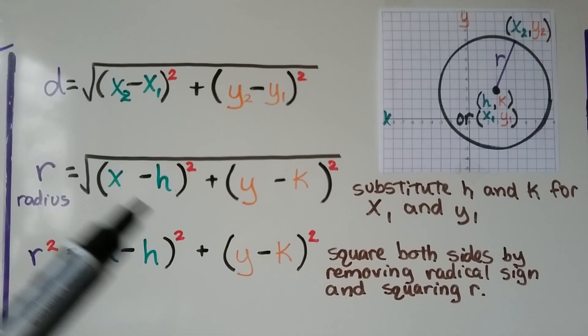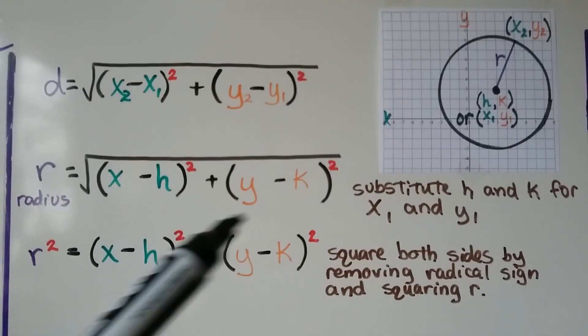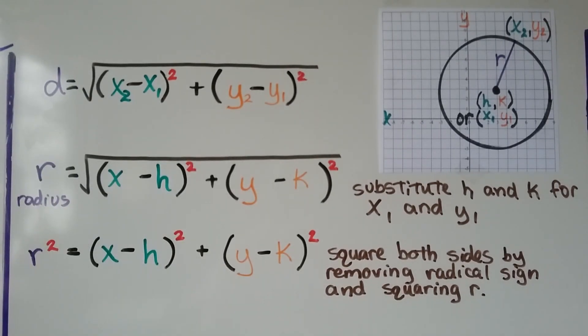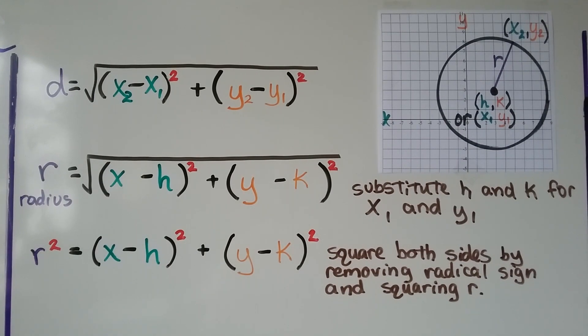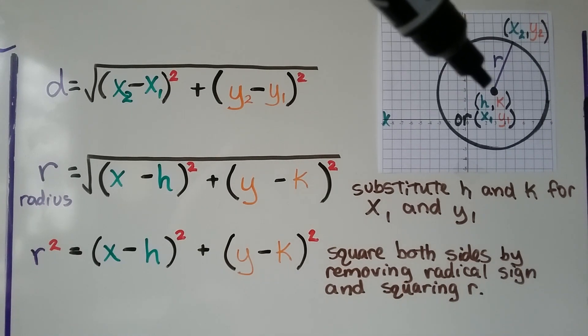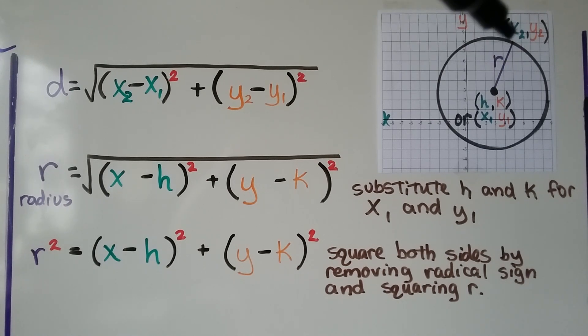This is really the x sub 2 and the y sub 2. We can square both sides by removing the radical sign and squaring r. So removing this radical sign, we put the two exponent here, and we get that the radius squared is equal to x minus h squared plus y minus k squared. And this hk is the center point. So from the center point along this radius here to this point would be the xy.